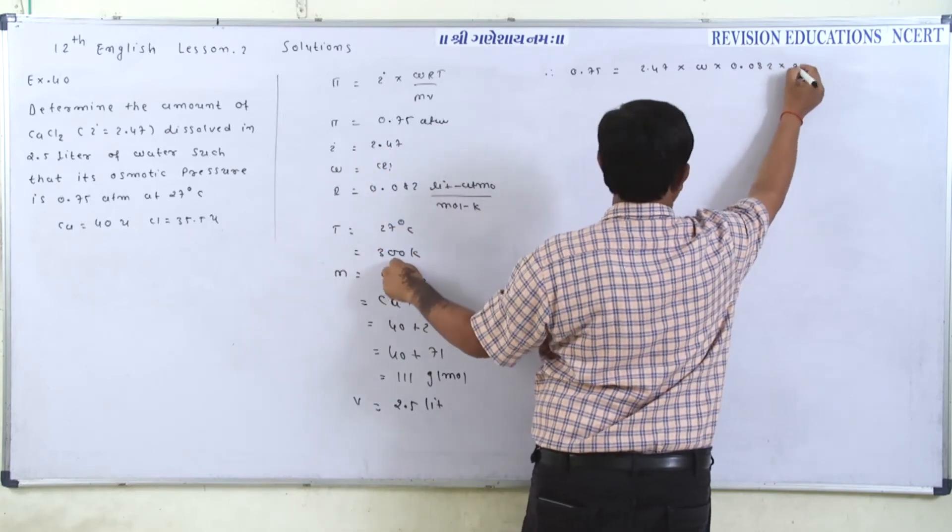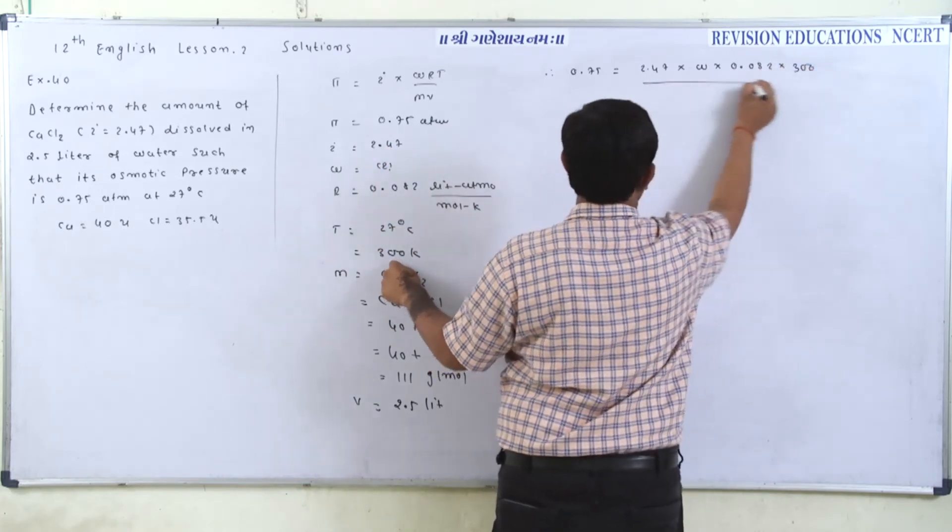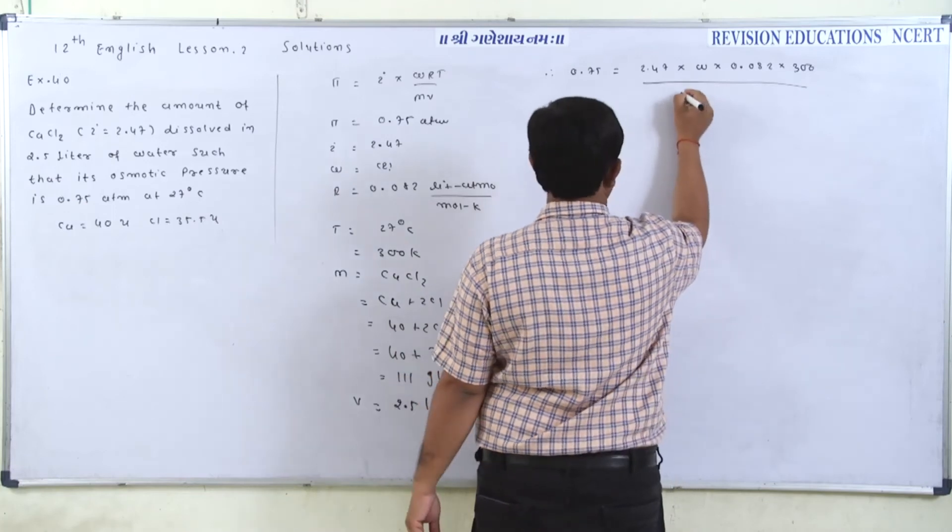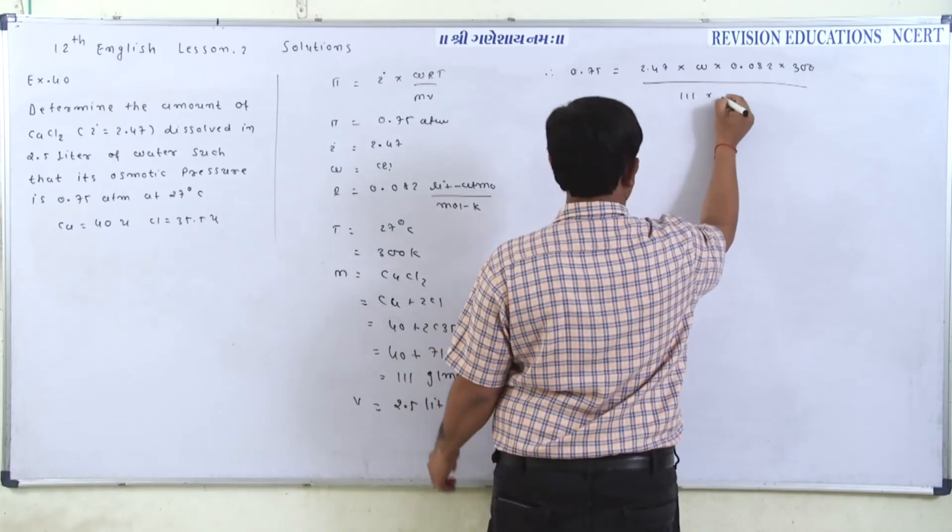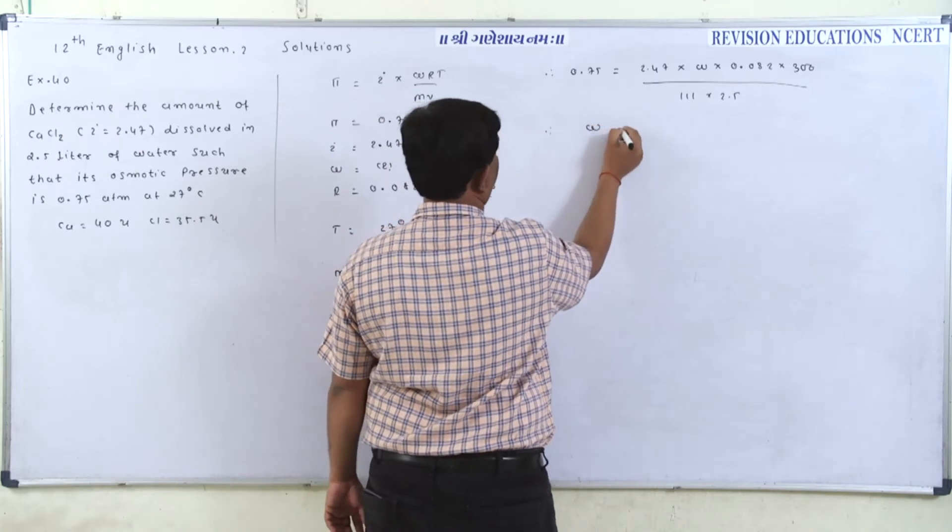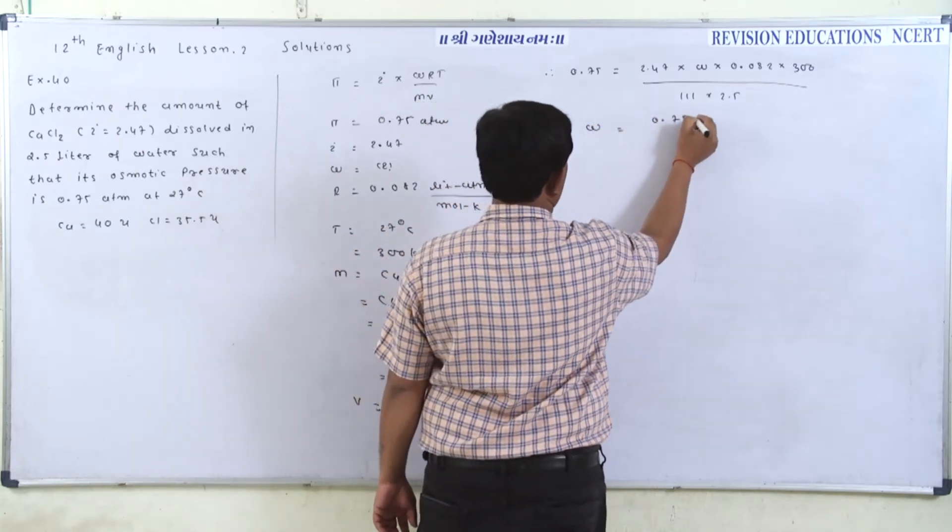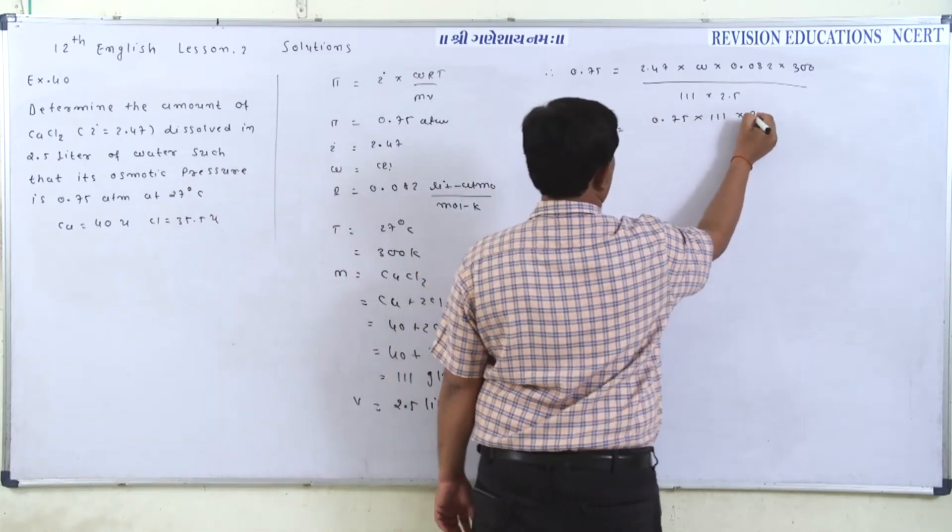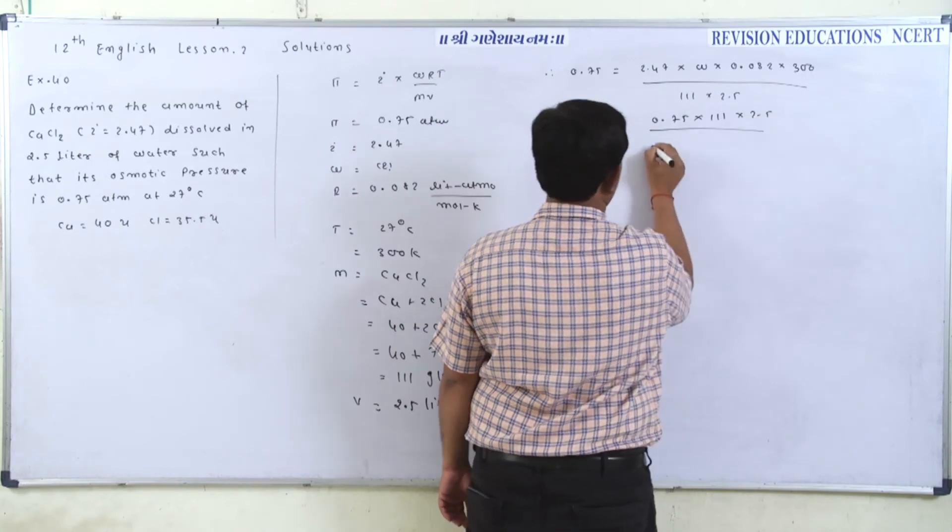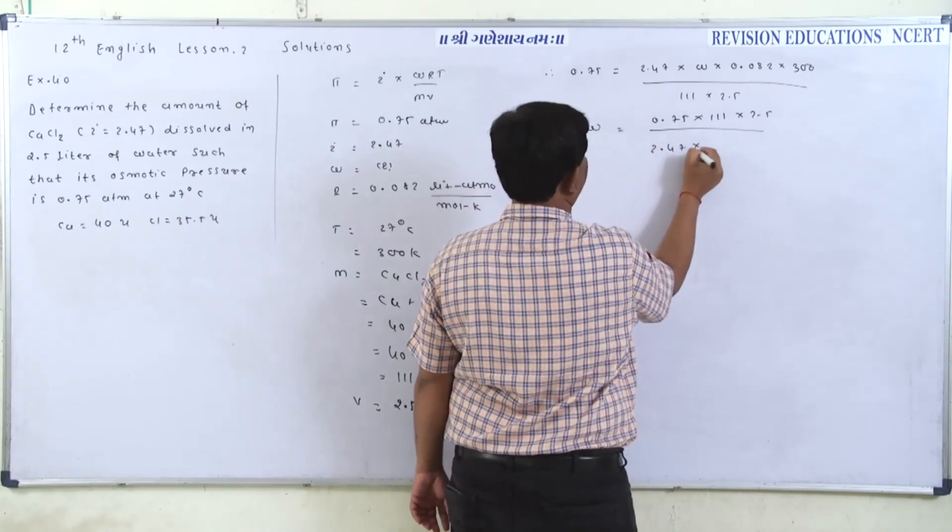We will divide by molecular mass which is 111 and volume we have as 2.5. So therefore w equals 0.75 into 111 into 2.5 whole divided by 2.47 into 0.082 into 300.